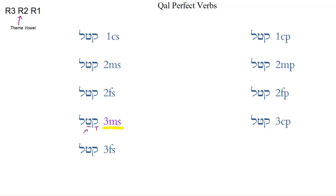It's helpful at this point to look at the other form that does not add a syllable. Notice that there's no syllable added at the end. The other such form is the second feminine singular. The ending is just a tav with a silent shewa underneath it, and so we end up with katalt. The accent is still on the last syllable. This is two silent shewas next to each other, so we just have katalt. Note that the tav has a dagesh lene because it comes after a silent shewa.